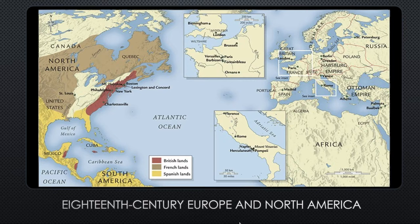One of the big ideas of the Enlightenment is that all white men deserved equal rights and opportunities — that's not how they said it at the time, but that's what they meant. At the end of the 18th century — the 1700s — some very big events occurred, which I'll address as we move through this.